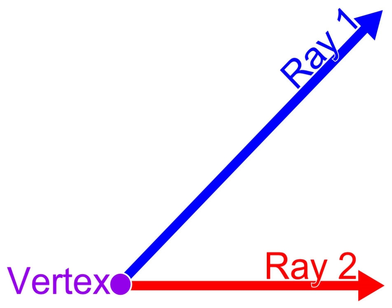One full turn, for which θ equals n units, corresponds to an arc equal in length to the circle's circumference, which is 2πr, so s = 2πr. Substituting n for θ and 2πr for s in the formula results in k = n / (2π).